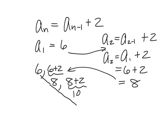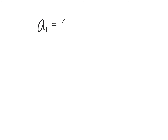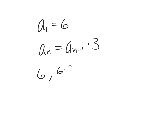Here's another example using the same subscript notation with a sub 1 equals 6. This time the formula is a sub N equals a sub N minus 1 times 3. The first term is 6; 6 times 3 is 18; 18 times 3 is 54; and so forth.